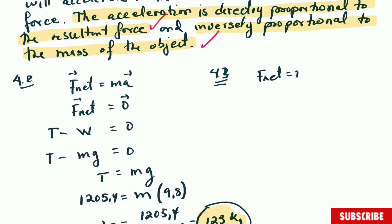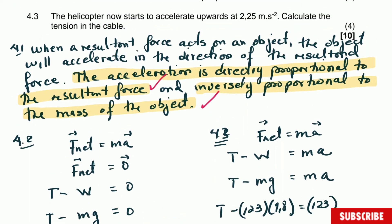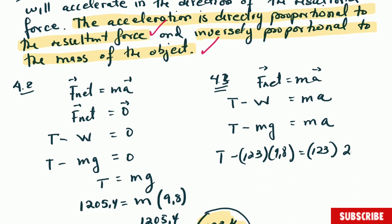In this case, F_net equals ma. Now it's correct, it's Newton's second law. What forces are acting? Tension minus weight equals mass multiplied by acceleration. We have tension minus mg equals ma. If we substitute everything here, T minus 123 multiplied by 9.8 equals 123 multiplied by the acceleration, which is 2.25. And this is just calculation. You will get that the tension equals 1482.15 Newton. And this is the answer for this question.